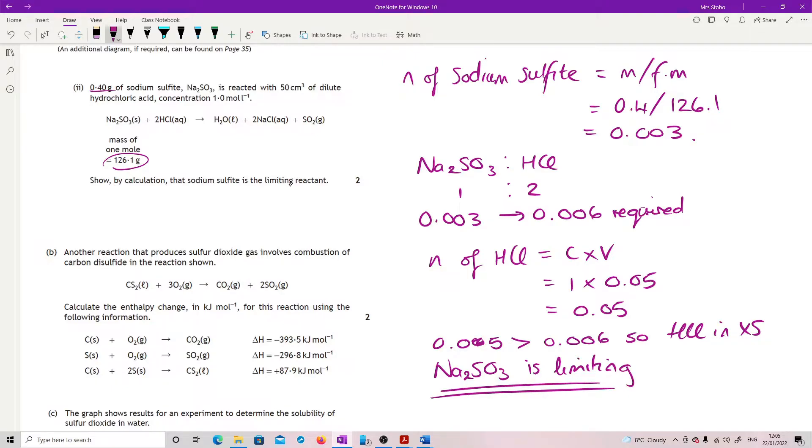So 0.05 is greater than 0.006. So hydrochloric is in excess and my sodium sulfite is limiting. I would pretty much put the whole thing in, including my little logic here, which is nice to always put down.